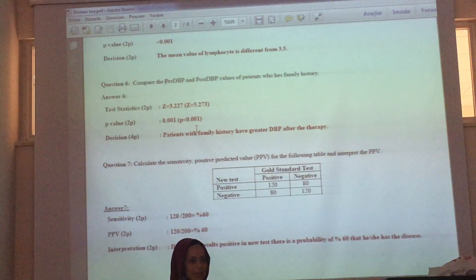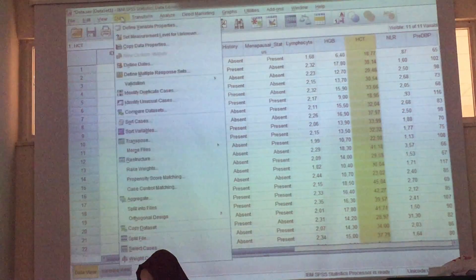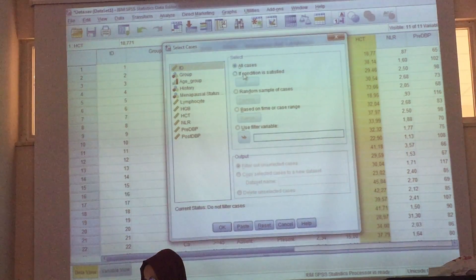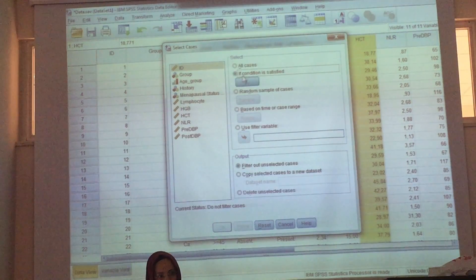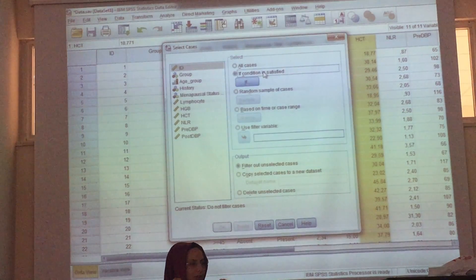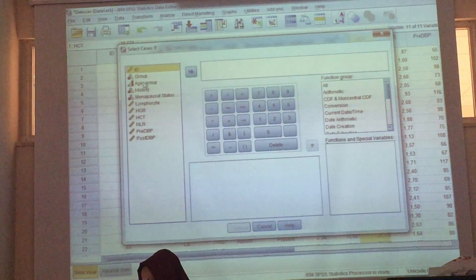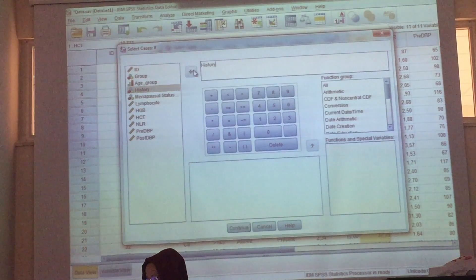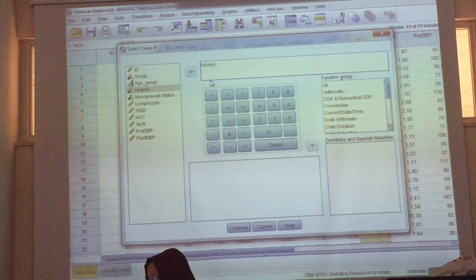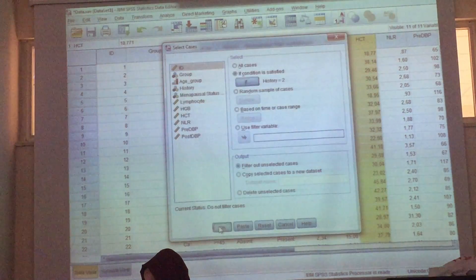Select case, okay, click select case. Let's go to data, select case, and enable this section. If condition is satisfied, what is my condition? Family history is present, right? Select if family history, history one is for absent, two is for present. History is equal to two, and select continue.